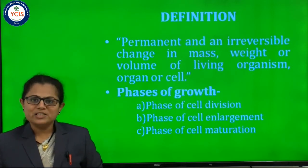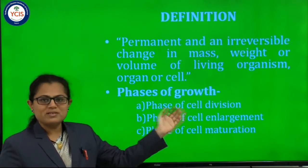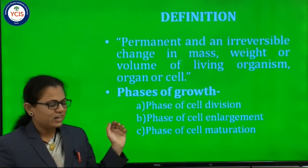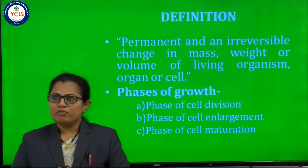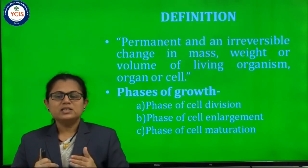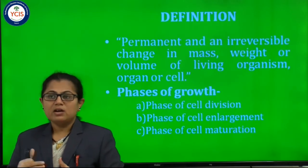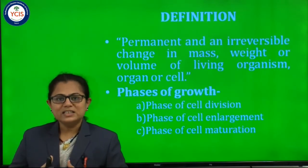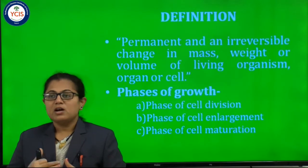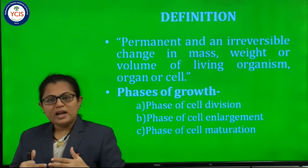Next, the phases of growth. The phases of growth are: first, the phase of cell division; second, the phase of cell enlargement; and third, the phase of cell maturation. In the phase of cell division, the cell divides mitotically to form two cells. Both daughter cells then enlarge in size by doubling or increasing their internal matter, including doubling of genetic material and other cellular organelles.